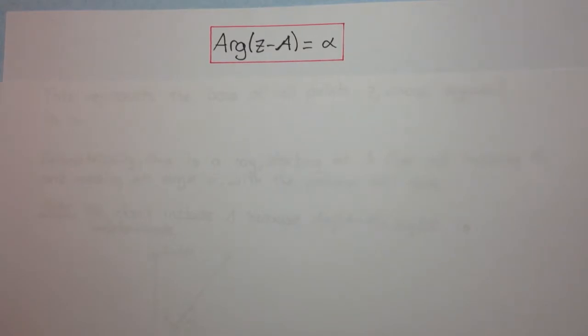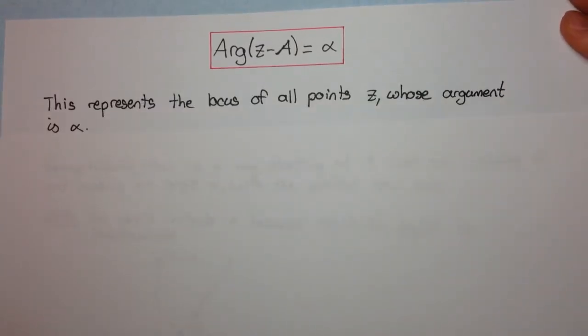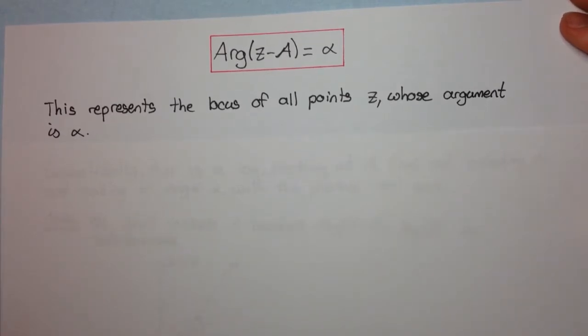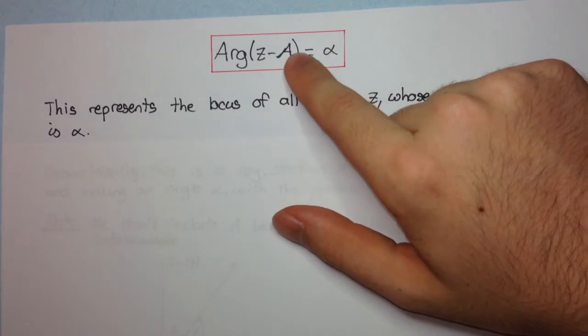Okay, once again, what does this mean in terms of a sentence? Well, this represents the locus of all points z whose argument is α. Now you might be wondering, well, that's the same as arg of z equals α. That's the locus of all points whose argument is α. So what does this minus a do here?